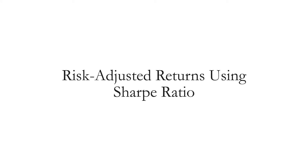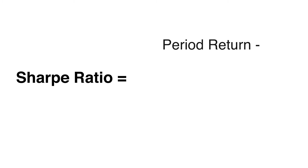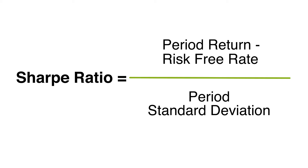Another way to look at performance is on a risk-adjusted basis. One way to do that is to use something called a Sharpe Ratio. You take the return of the investment over a period, you subtract out the risk-free rate, and then you divide it by the standard deviation for that same period. So the Sharpe Ratio provides you with the excess return you've received for the extra volatility you're taking in that investment.